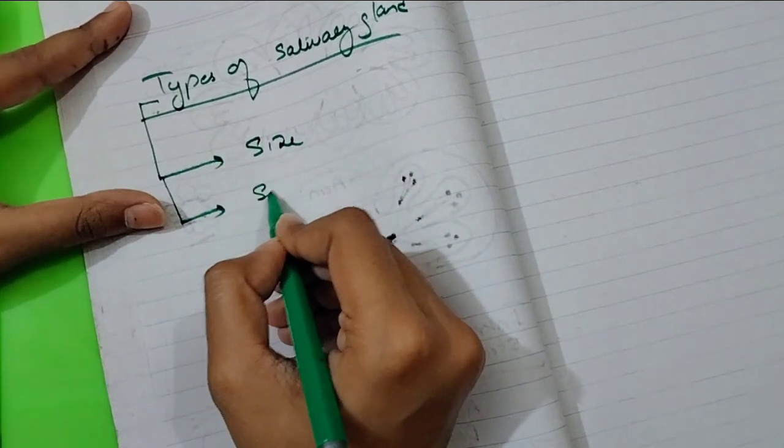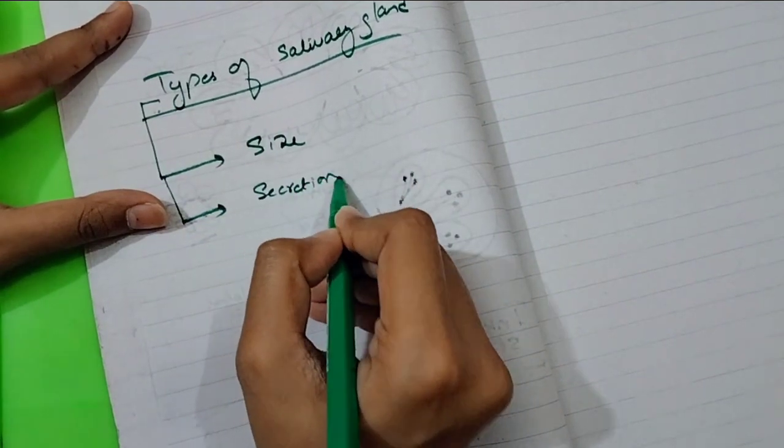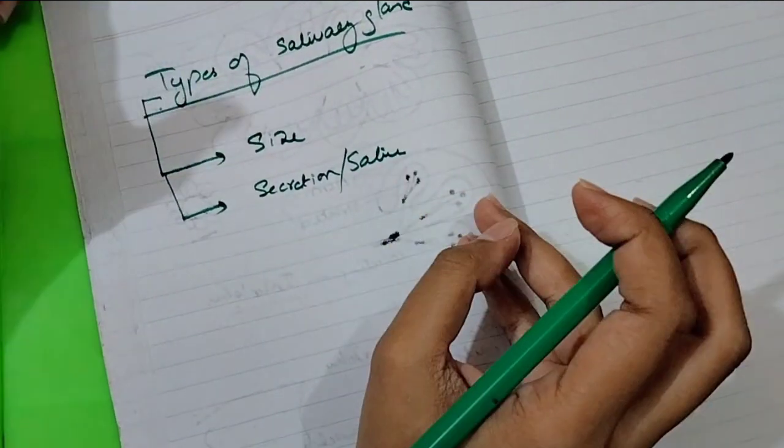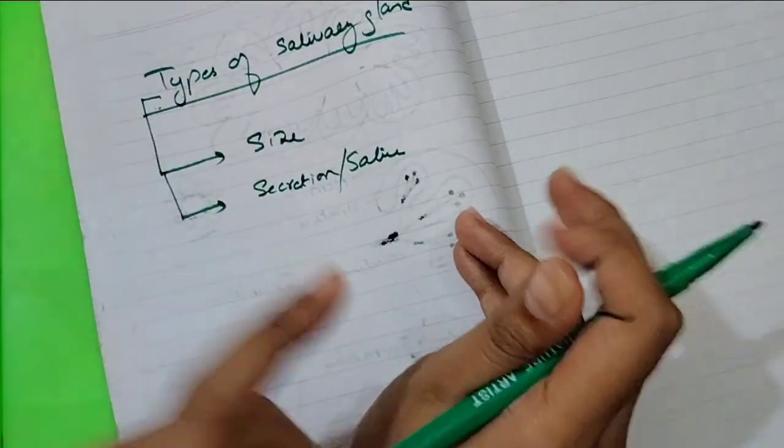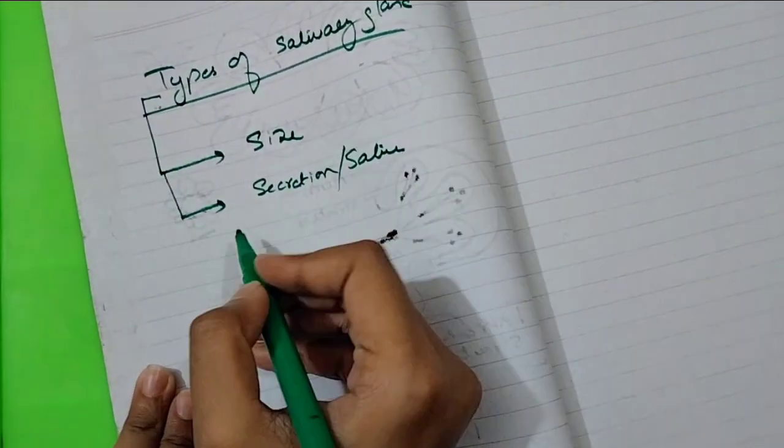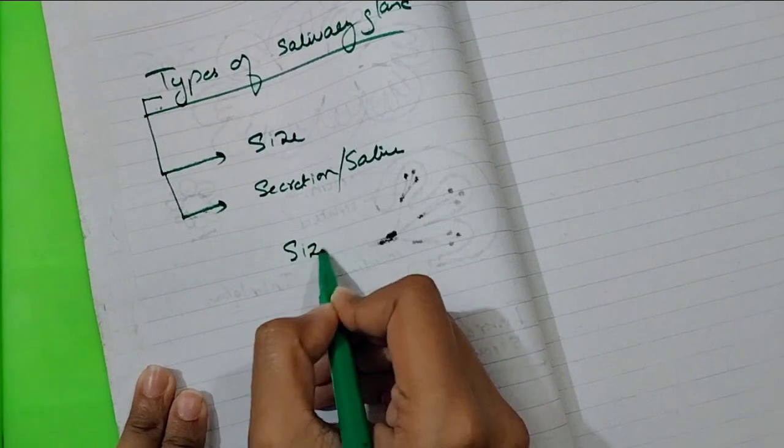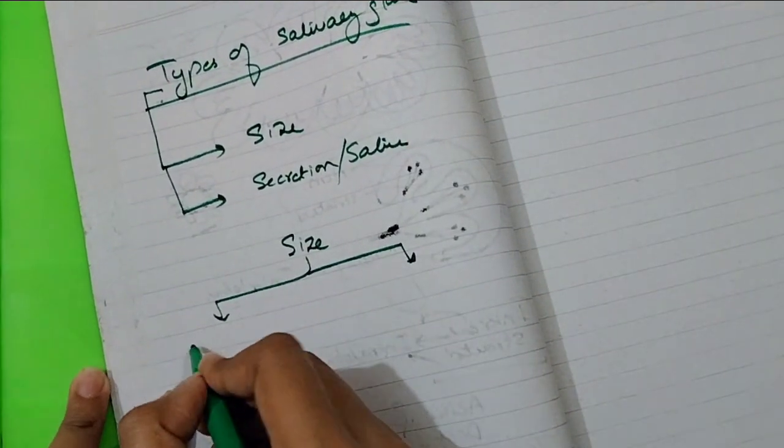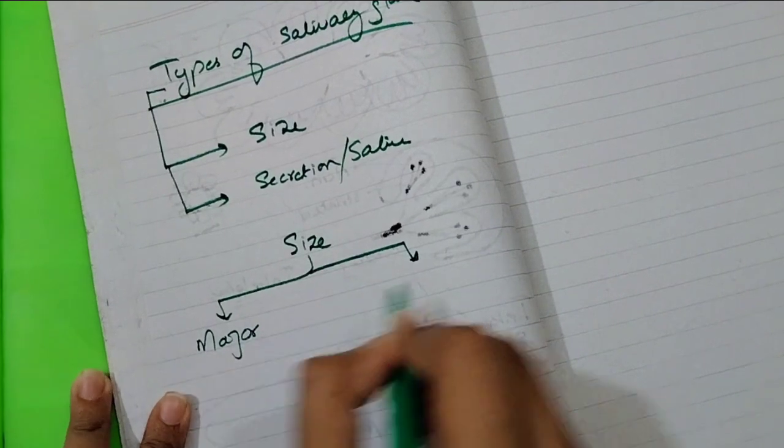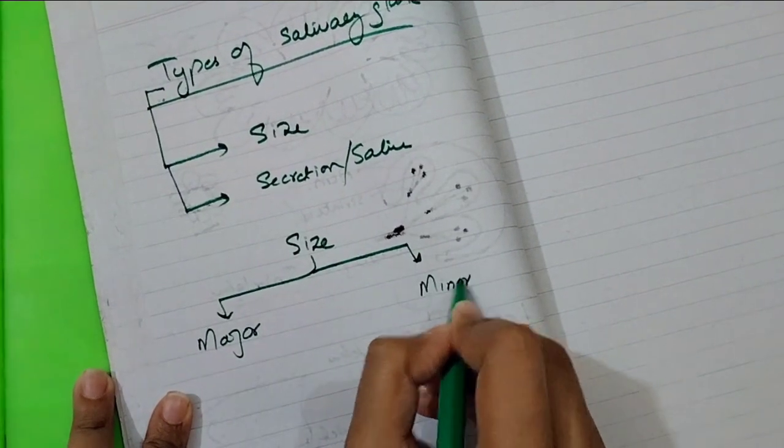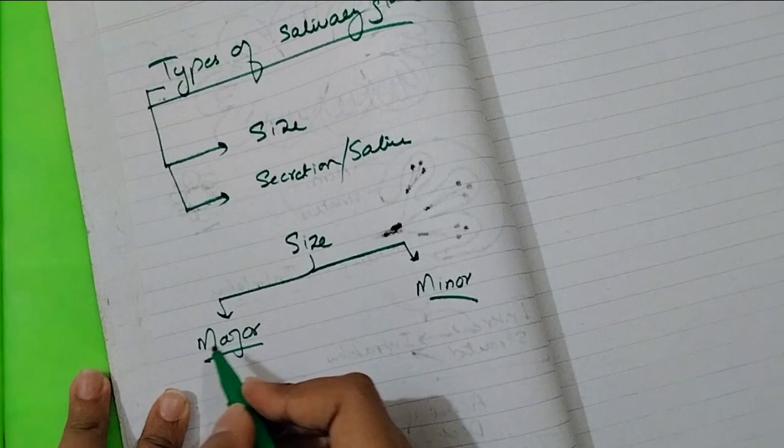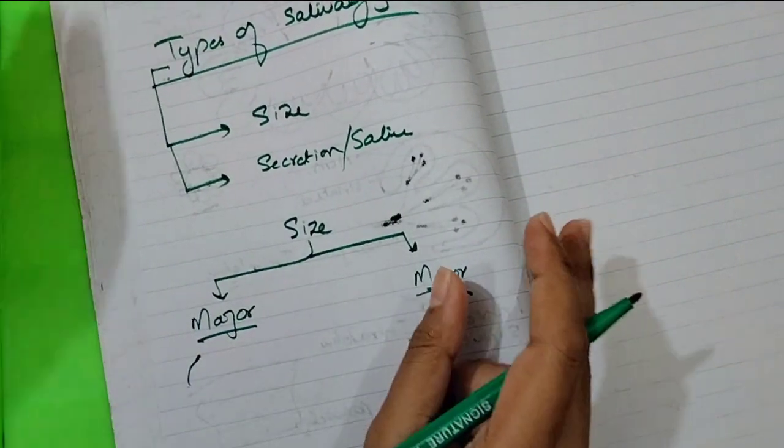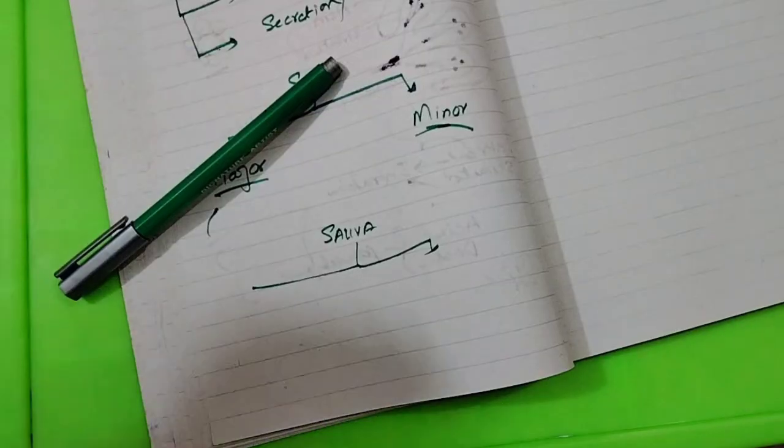And on the other base we divide by secretion. If we classify by size, we divide into two types: one is major glands and one is minor glands. You can understand from the name - major glands are bigger and minor glands are smaller.